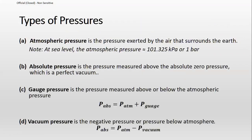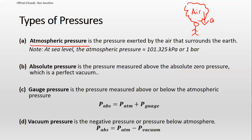What are the types of pressure we commonly encounter? First, we start with something universal — atmospheric pressure. This pressure is the pressure exerted by the air that surrounds the earth. Basically, you can imagine it as the air on top of us. If you are standing on the surface of the earth, the air above is actually exerting its weight upon us — we call this the atmospheric pressure.